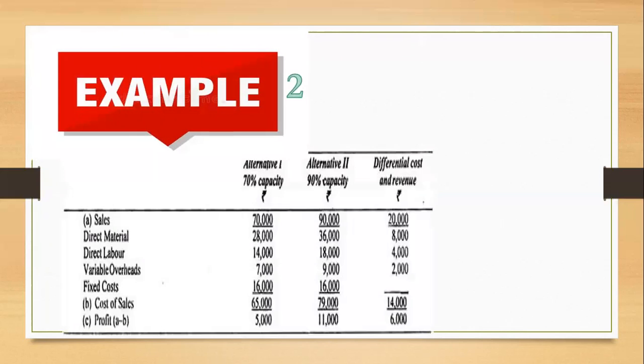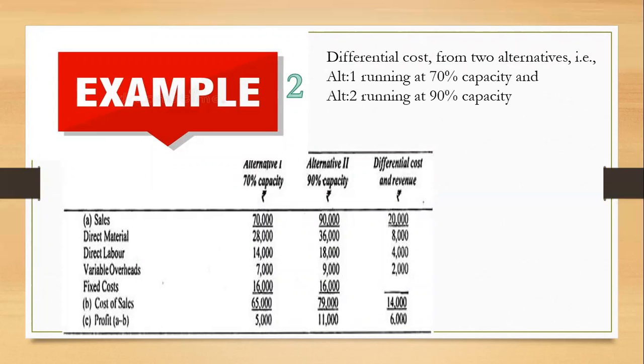Coming to the second example, differential cost from two different alternatives: alternative 1 running at 70% capacity and alternative 2 running at 90% capacity. If you look into alternative 1, working at 70% capacity, the sales is 70,000, the cost amounts to rupees 65,000, and the difference between the sales and the cost of sales, the profit is 5,000.